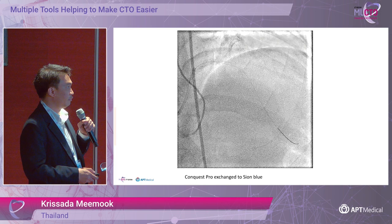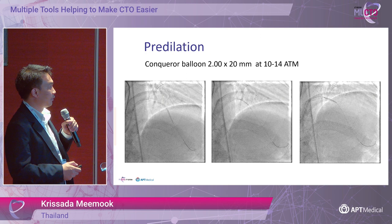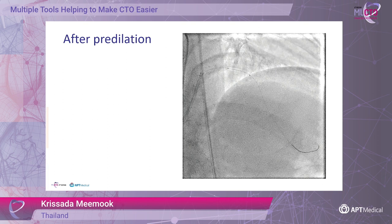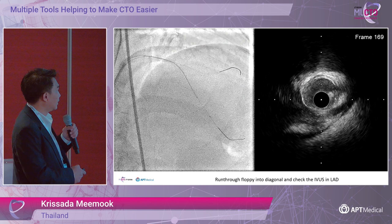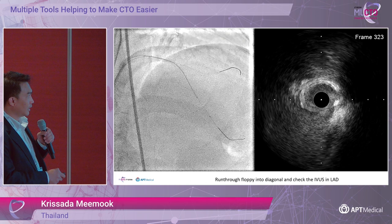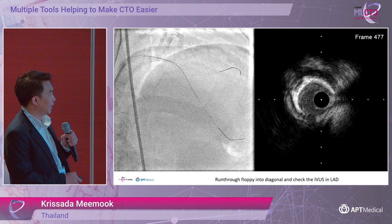Next, we performed balloon predilatation with a 2.0 mm balloon. This is the angiogram after predilatation — we saw some linear intraluminal filling defect in the mid-LAD that was not present before. I thought we might be in the subintimal space. So we put the wire into diagonal 2 and advanced IVUS into the LAD wire. You can see the LAD wire was in a false lumen, and when we pulled back the catheters, the wire was in a very large subintimal space.